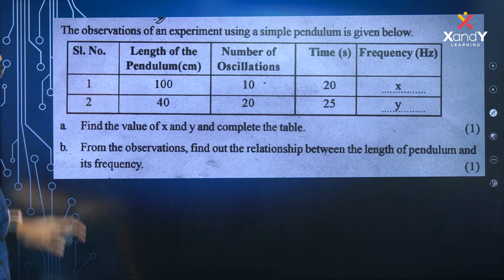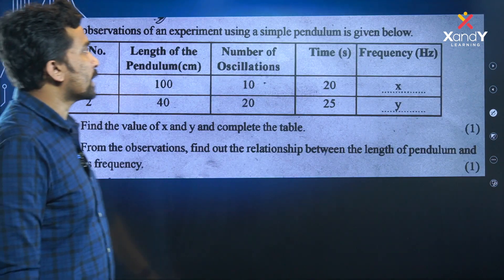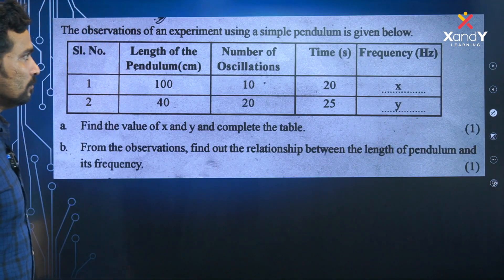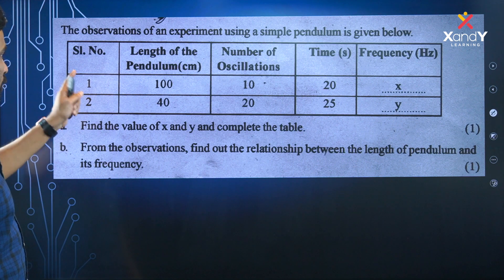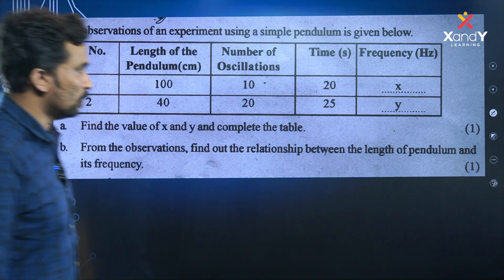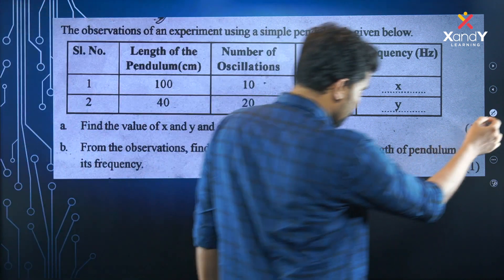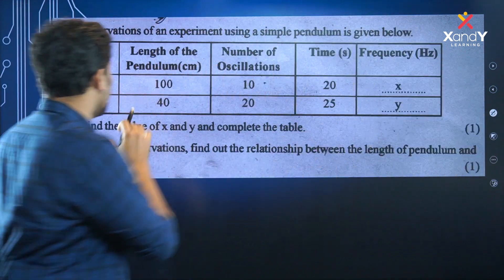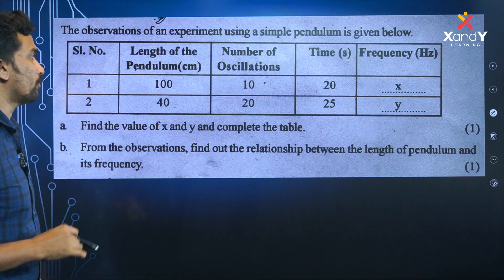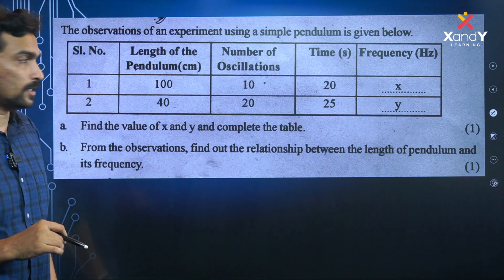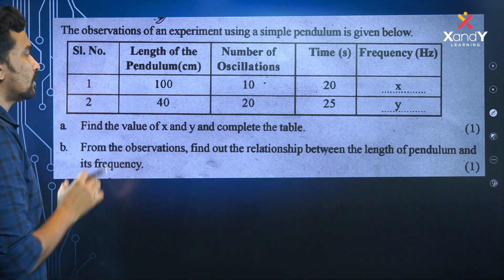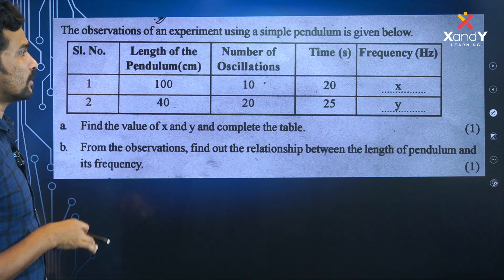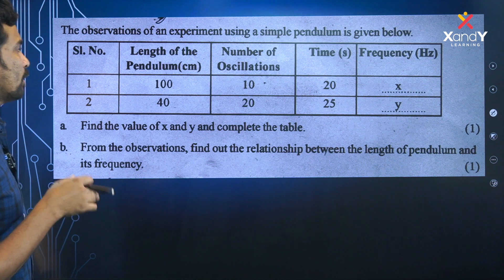Next: observations of an experiment using a simple pendulum are given below. The table shows the length of the pendulum, number of oscillations, and time period.